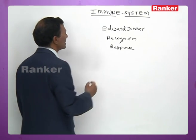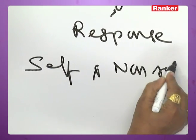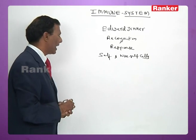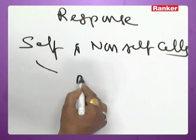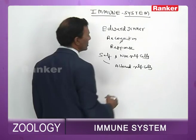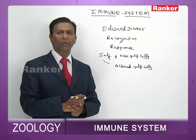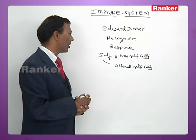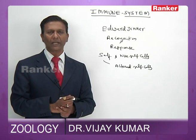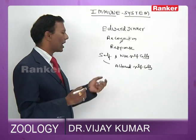The immune system always differentiates between self and non-self cells, and among self-cells, sometimes there may be altered self-cells. Non-self cells are those that enter the human body from the outside environment, i.e., foreign cells. Altered self-cells are cells of the human body that get altered due to invasion of viruses or cancer.